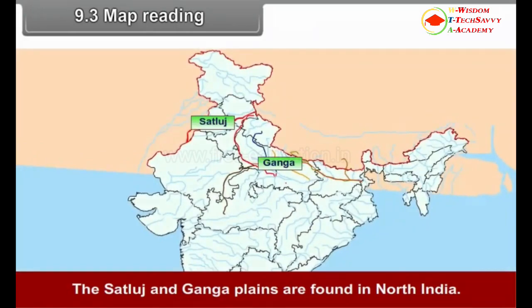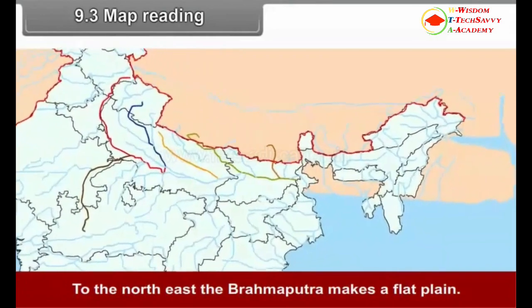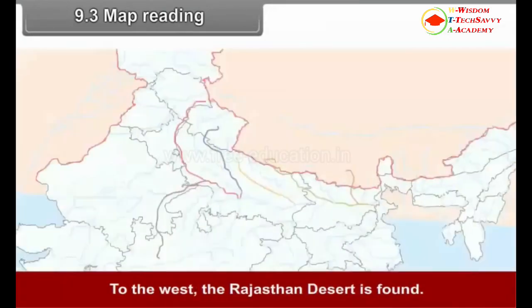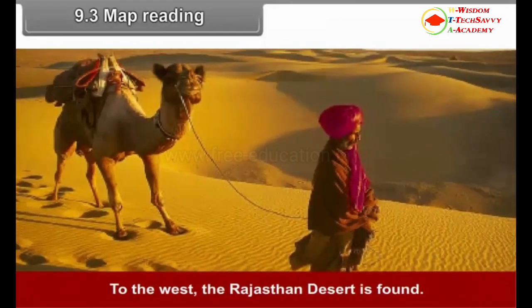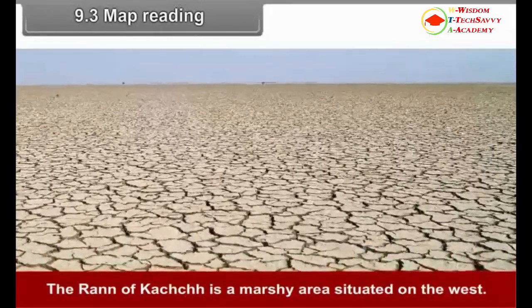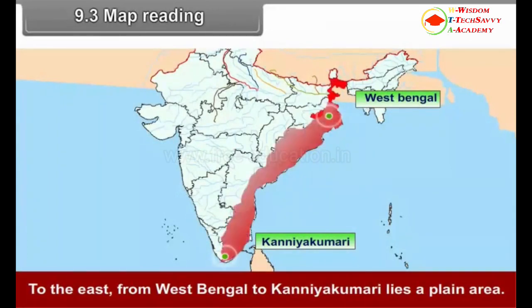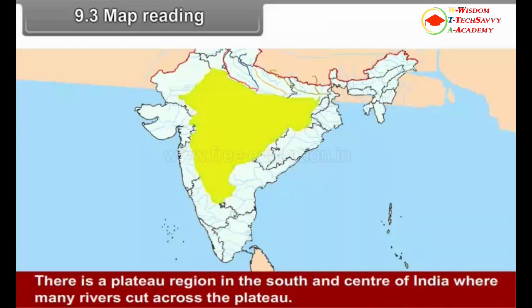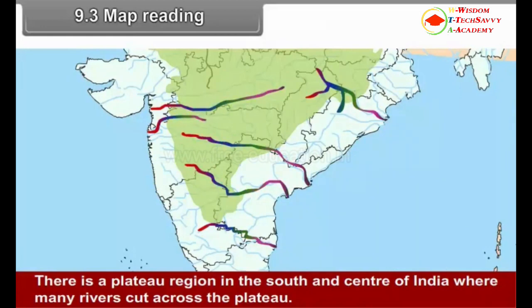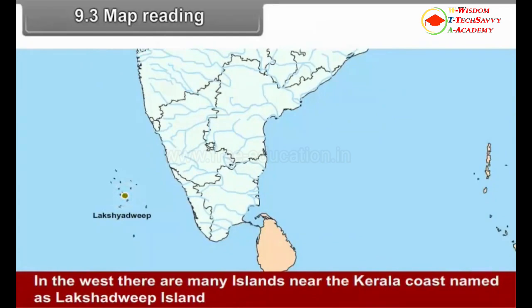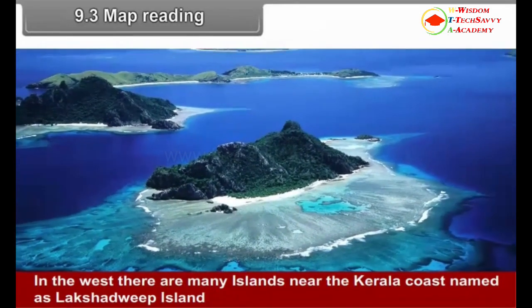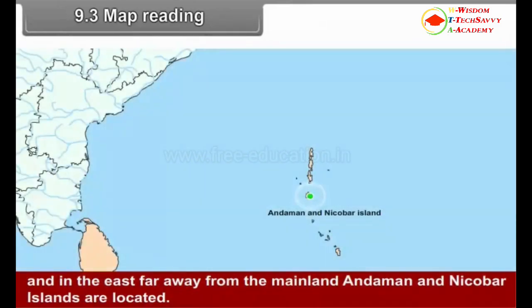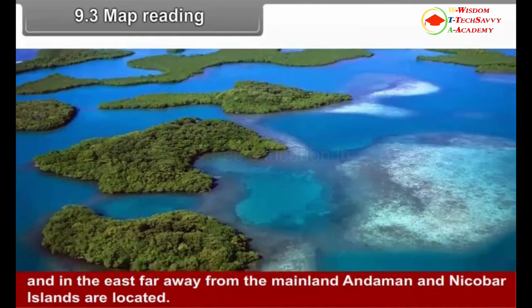The Sutlej and Ganga plains are found in north India. To the north-east, the Brahmaputra makes a flat plain. To the west, the Rajasthan desert is found. The Rann of Kutch is a marshy area situated on the west. To the east, from West Bengal to Kanyakumari lies a plain area, which is broader than the west coastal strip. There is a plateau region in the south and centre of India. In the west, there are many islands near the Kerala coast known as Lakshadweep Islands, and in the east, far from the mainland, Andaman and Nicobar Islands are located.